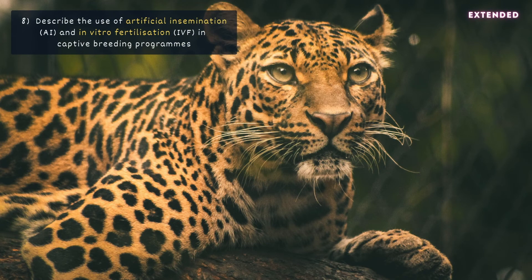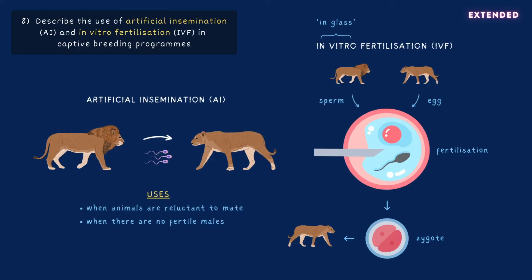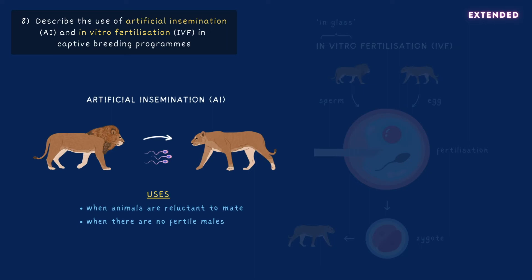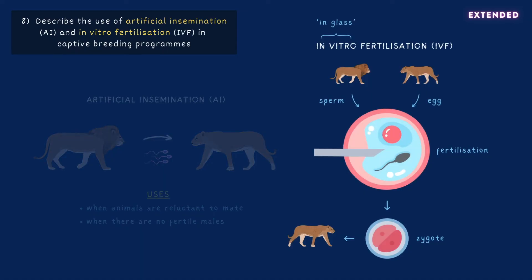Captive breeding programs are one way of conserving endangered species. In order to improve their effectiveness, artificial insemination and in vitro fertilization are sometimes used to increase fertility rates. Artificial insemination involves collecting sperm samples from the male animal and artificially introducing them into a female's reproductive system. Sperm samples can be frozen and delivered from elsewhere, which boosts genetic diversity and eliminates the need for a male. In vitro fertilization, or IVF, refers to the fertilization of an egg outside of the animal. Eggs are extracted and mixed with sperm, and when a zygote forms, it's reinserted into the uterus of the female. IVF allows captive breeding programs to go ahead when a female is unable to breed naturally, or a male doesn't produce enough functional sperm.